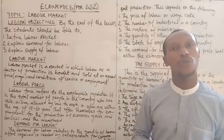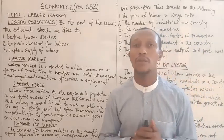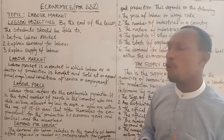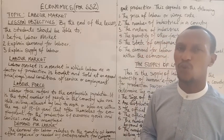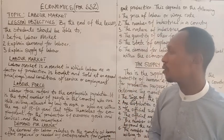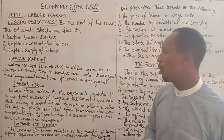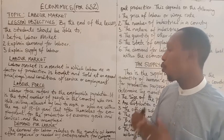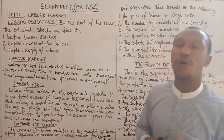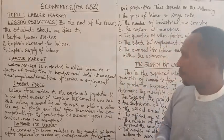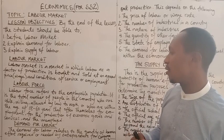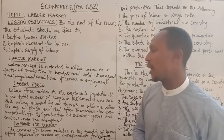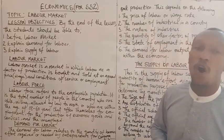Let us look at labor force as well, because labor force and labor market are not the same thing. Labor force refers to the employable population. It is the total number of people in the country who are able, willing, and allowed by law to work, or who are within the age of 18 to 60 years, that offer themselves for employment for the production of economic goods and services — and the unemployed.